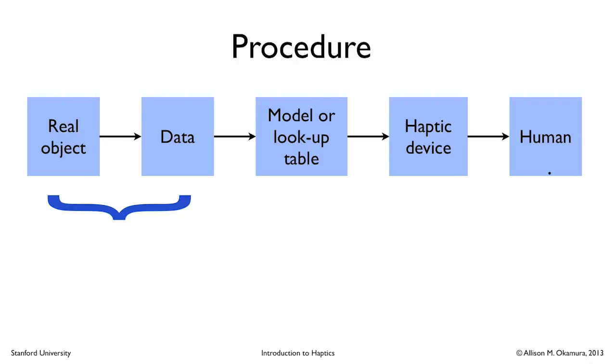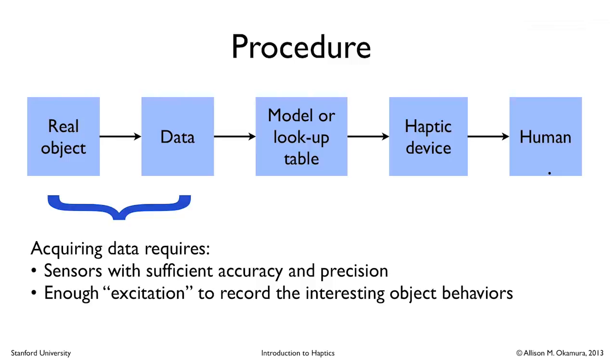So let's look at these filters in more detail. The first part is just the process of acquiring the data. If you want to do a good job at this, you need to have sensors with sufficient accuracy and precision. We can certainly argue that the force-sensitive resistor doesn't necessarily have that to do a really good job here, but the hope is that it's good enough to create something interesting. In addition, it's not good enough just to have a nice sensor. You also have to have some sort of excitation of the system so that you can record interesting object behaviors. So let's take, for example, the feeling of pressing on a button. I could take a force sensor and a position sensor and push on that button once. But if I push on it at a different speed, I might get some different data. So you might want to interact with an object in many different ways so that you can understand all of the variables that might be relevant.